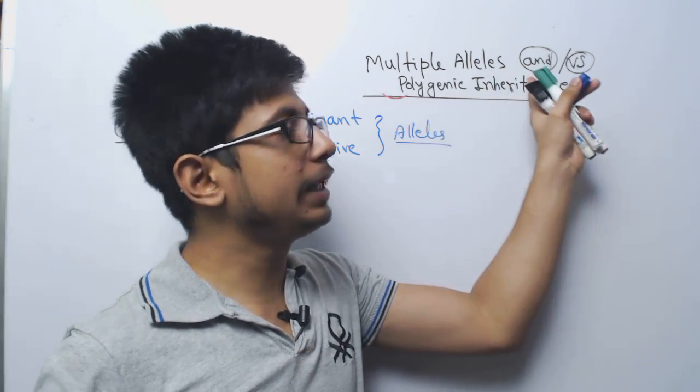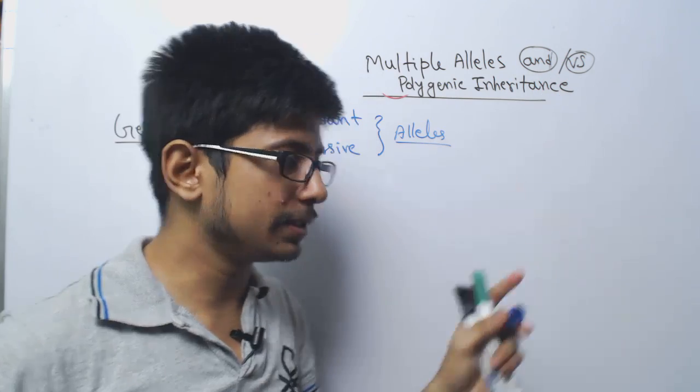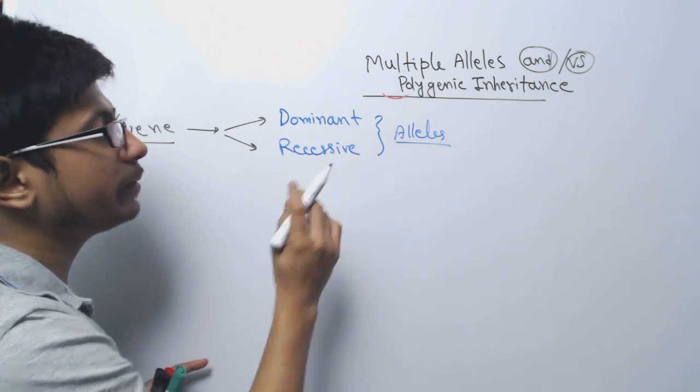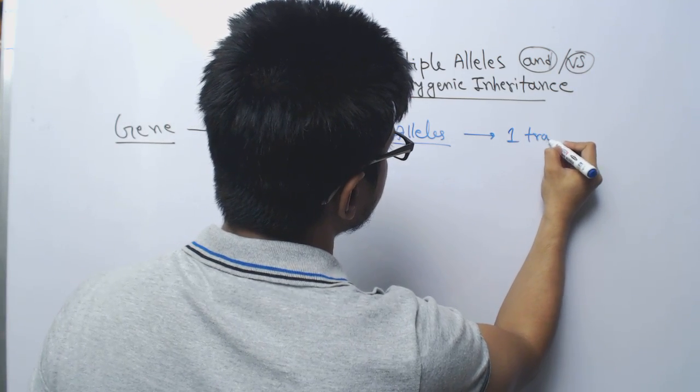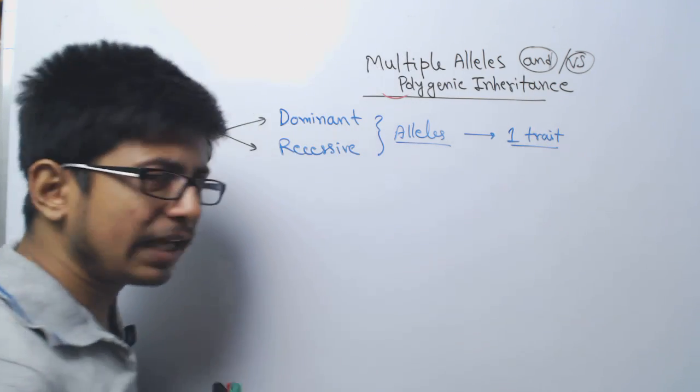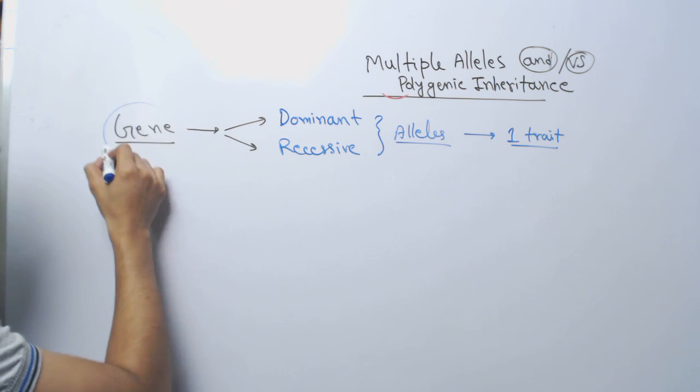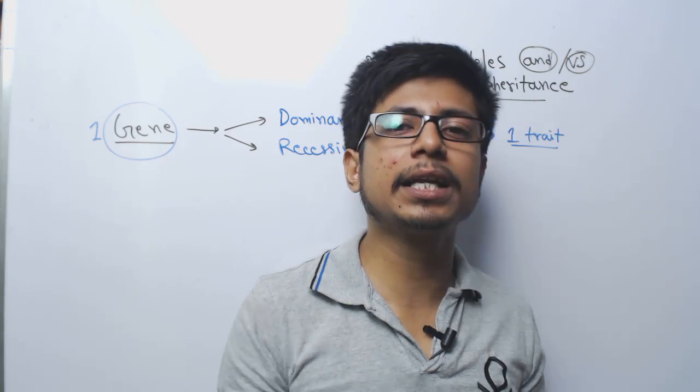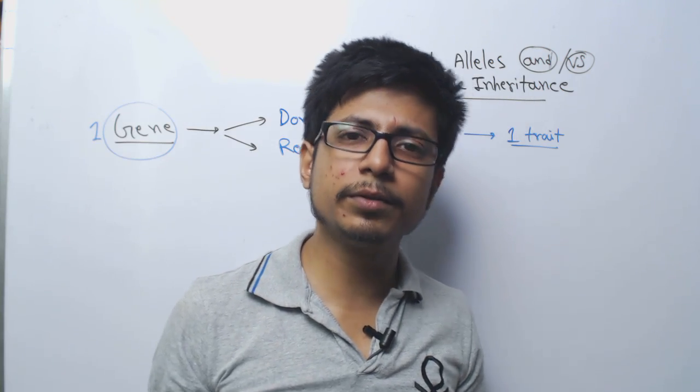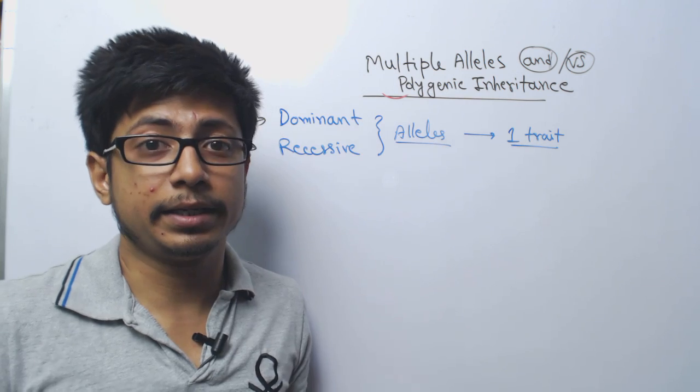Multiple allele inheritance means multiple alleles will be involved in controlling one trait. That means it could be based on one gene, because one gene has multiple alleles. One gene can control a trait and that could be known as a multiple allelic trait.